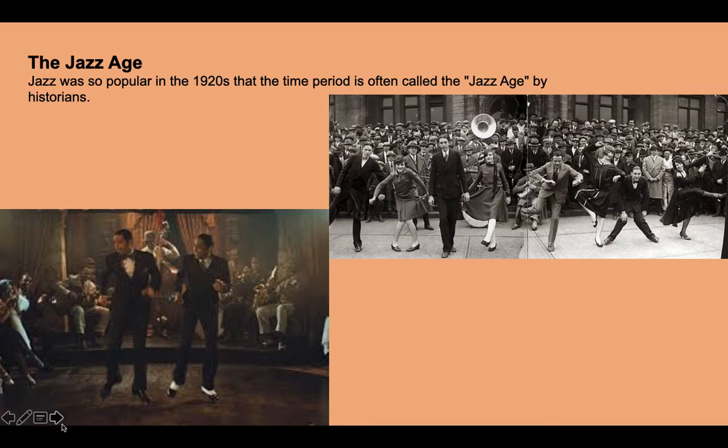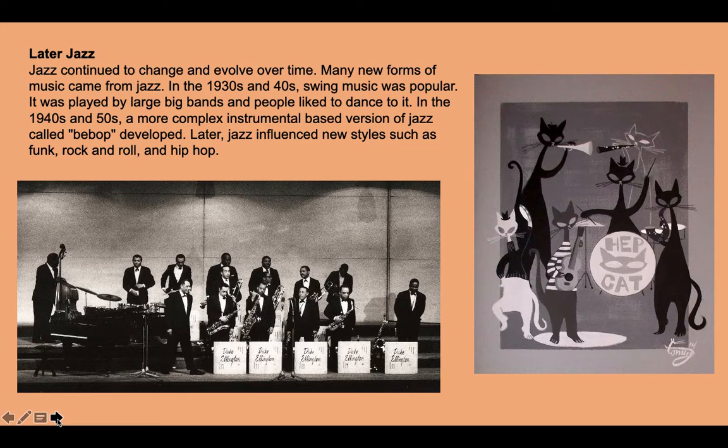Later, jazz continued to change and evolve over time. Many new forms of music came from jazz. In the 1930s and 40s, swing music was popular — it was played by large big bands, and people liked to dance to it. In the 1940s and 50s, a more complex, instrumental-based version of jazz called bebop developed. Later, jazz influenced new styles such as funk, rock and roll, and hip-hop.